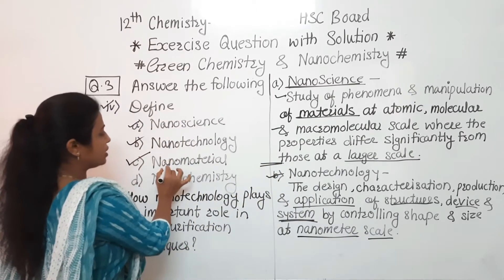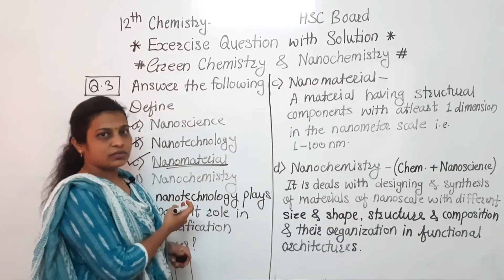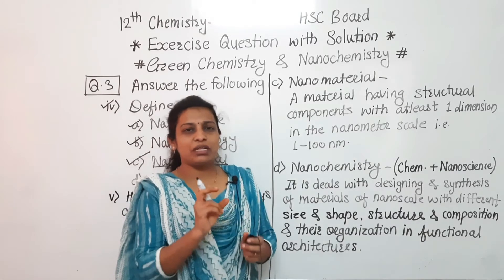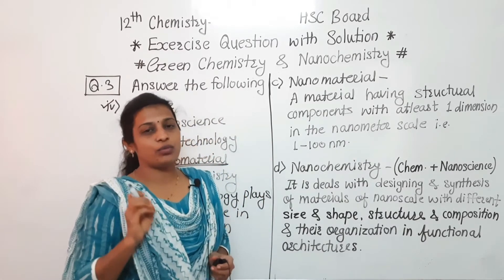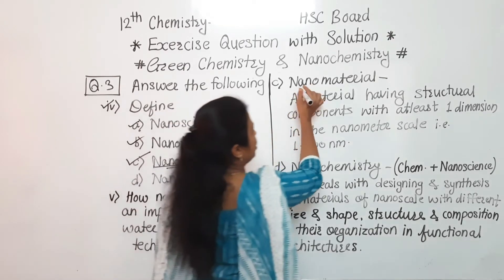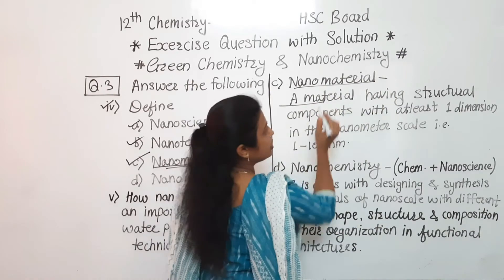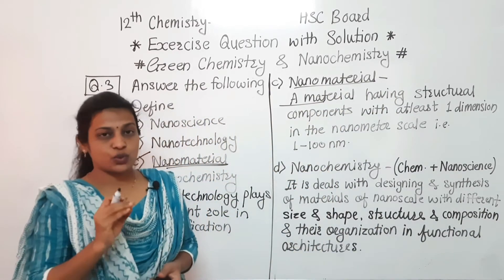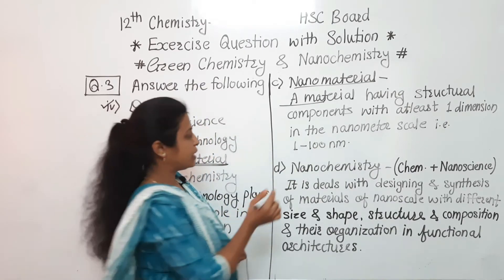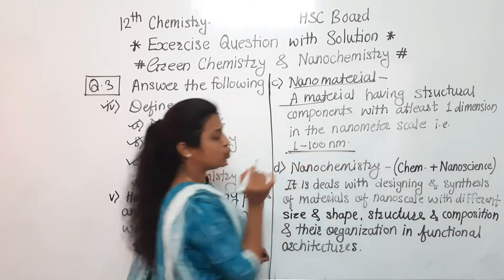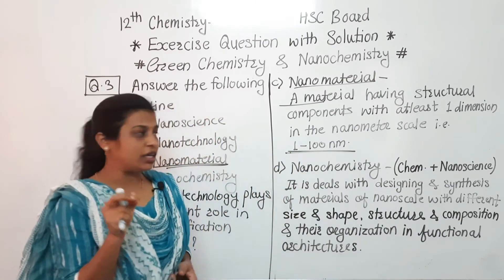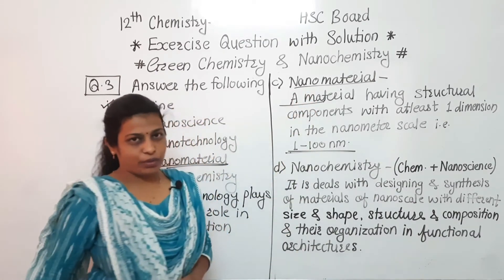Nanomaterials are materials whose size is in the range of one to one hundred nanometers. More precisely, nanomaterials are materials having structural components with at least one dimension in the nanometer scale — that range defines the size of nanomaterials.